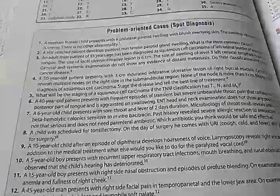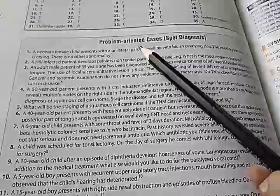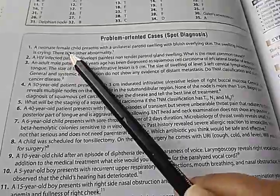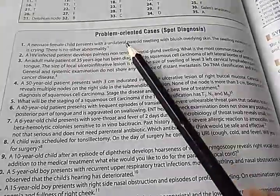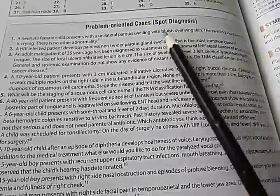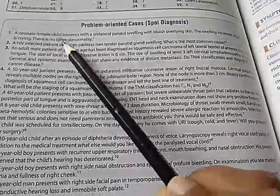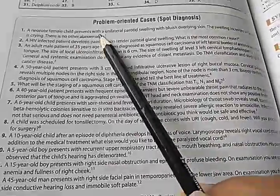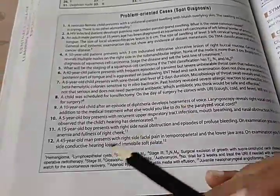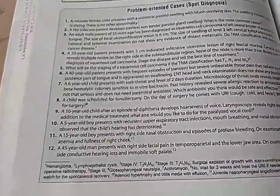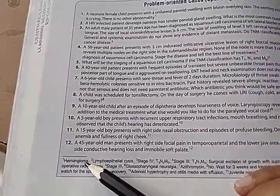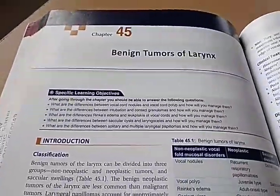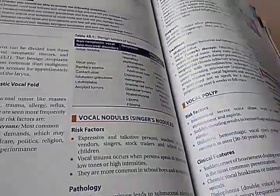The book also has problem-oriented spot diagnosis cases — for example, a neonate female child presents with unilateral parotid swelling, no other development, swelling increases — the answer is hemangioma. Then there are benign tumors of the larynx.